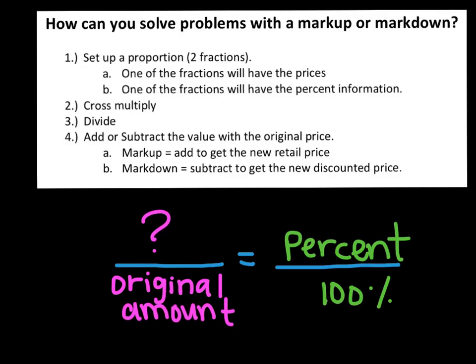How are we going to solve these problems when we're faced with a markup or a markdown? The steps are very similar to ones we've already done in previous homeworks. Number one: set up the proportion, which has two fractions — one fraction will have the prices and the second fraction has all your percent information. Then cross multiply, then divide. For a markup, we add to get a new price. For a markdown, we subtract to get the new price.